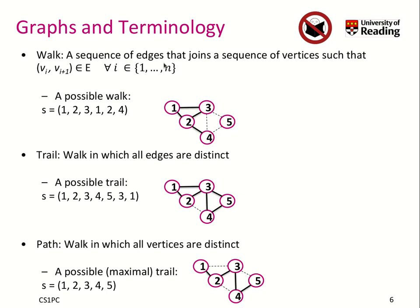A walk is a sequence of edges that join a sequence of vertices such that those edges actually exist in our graph. In this graph here, we can start at node 1, then go to node 2 because there is an edge, then to node 3, then to node 1 again, then to node 2, and node 4 finally. That is a possible walk.